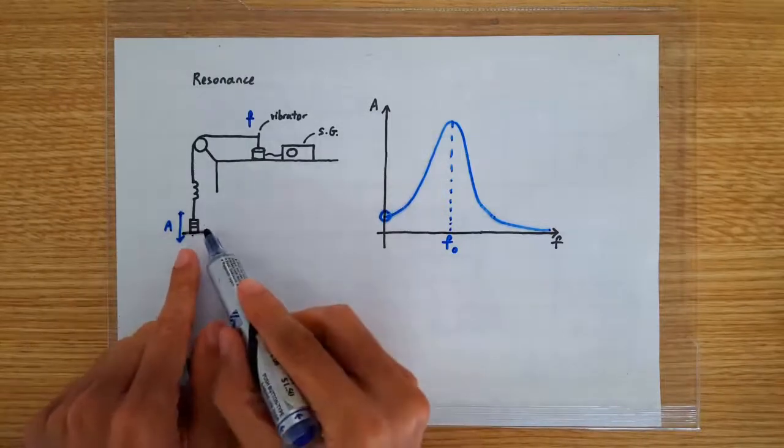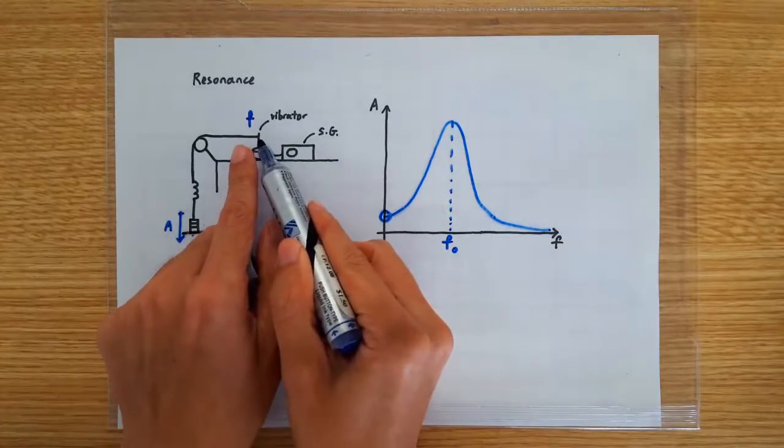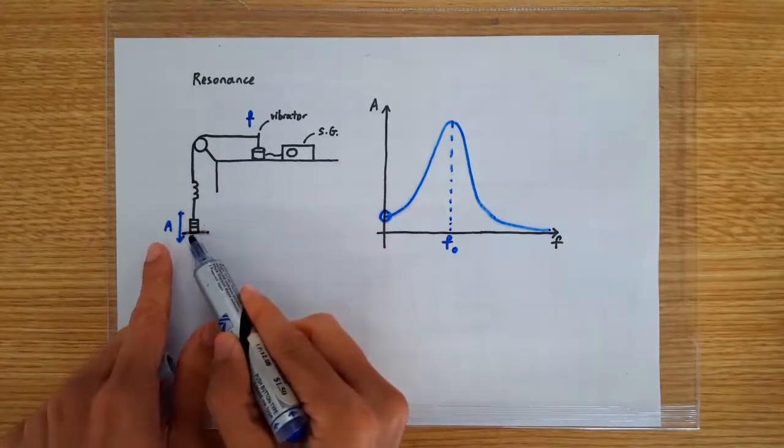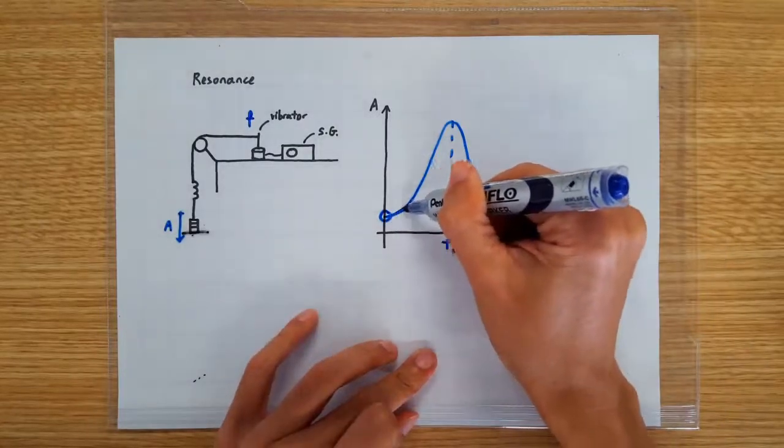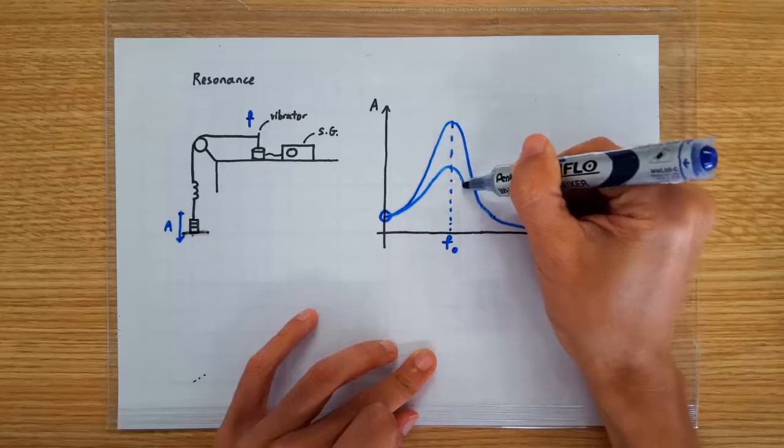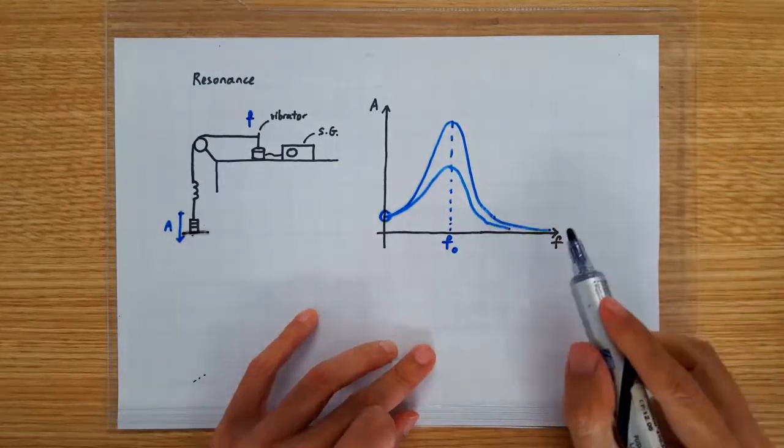So we'll reach the stage when the rate of loss matches the rate of input at a lower amplitude of oscillation. This explains why the resonance graph will reach a lower resonance peak when we increase the amount of damping.